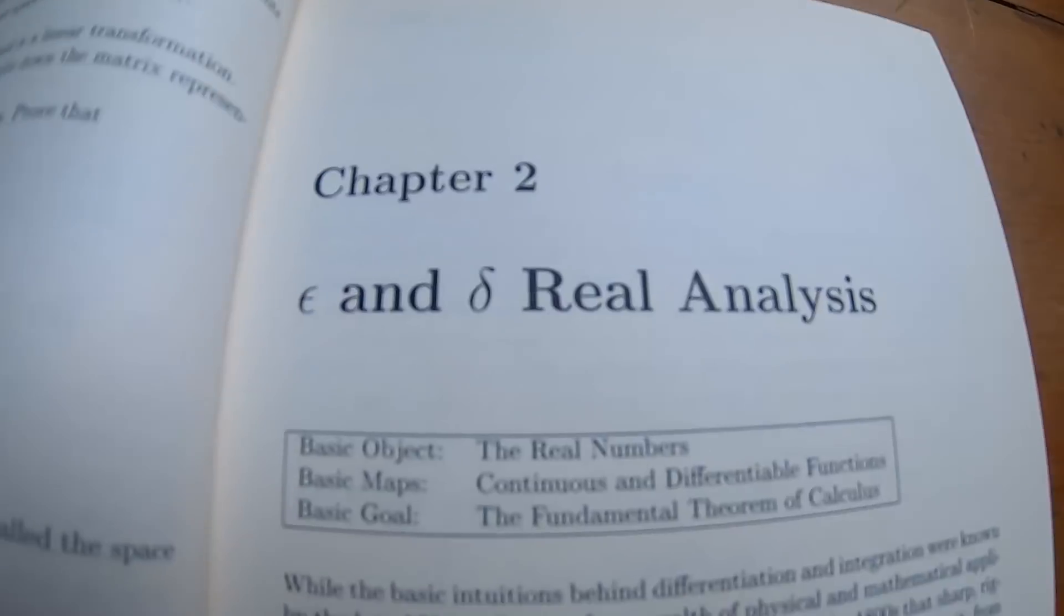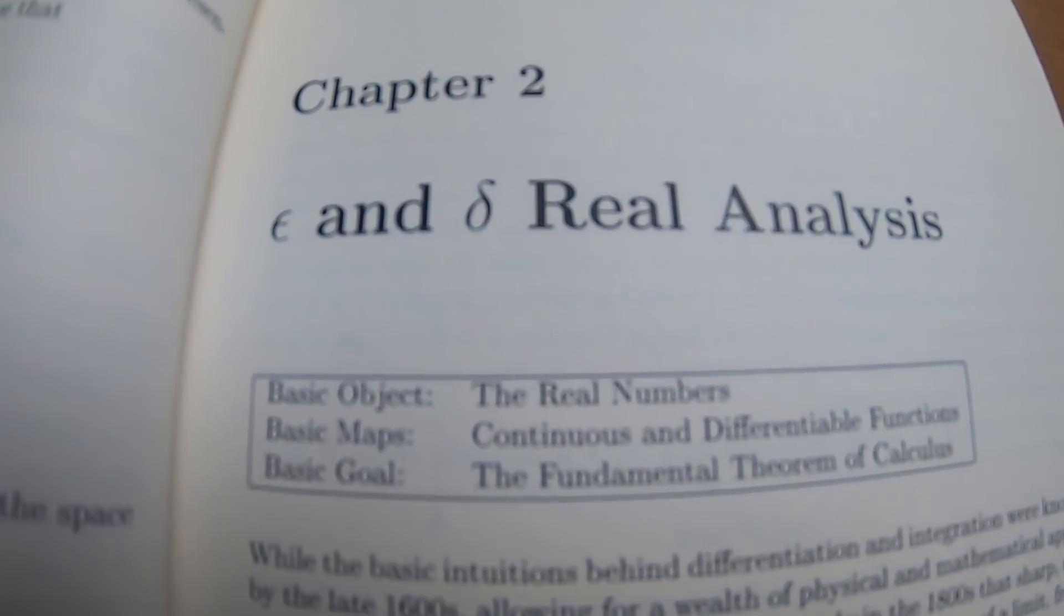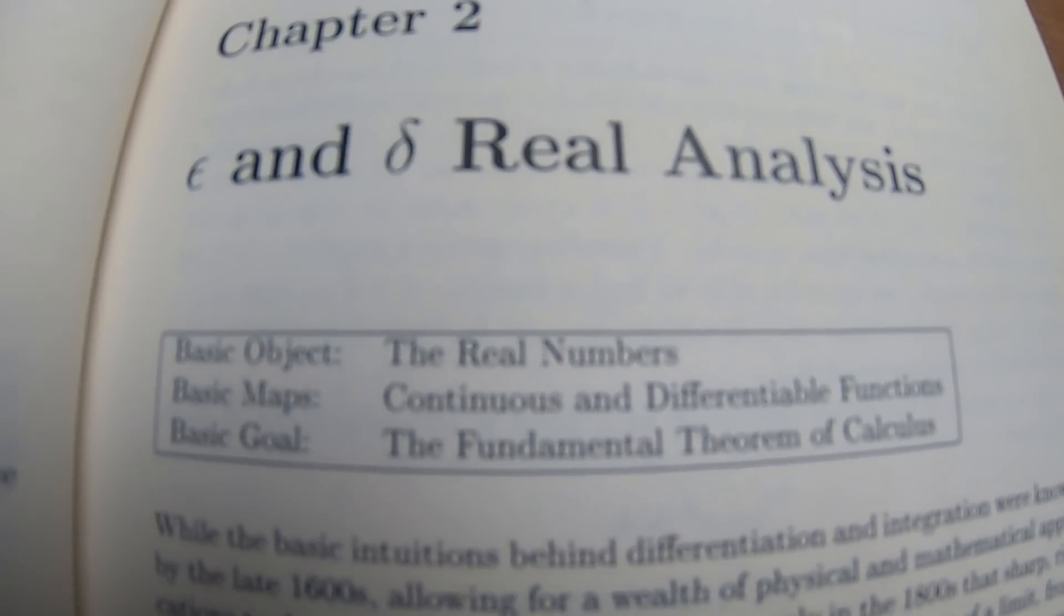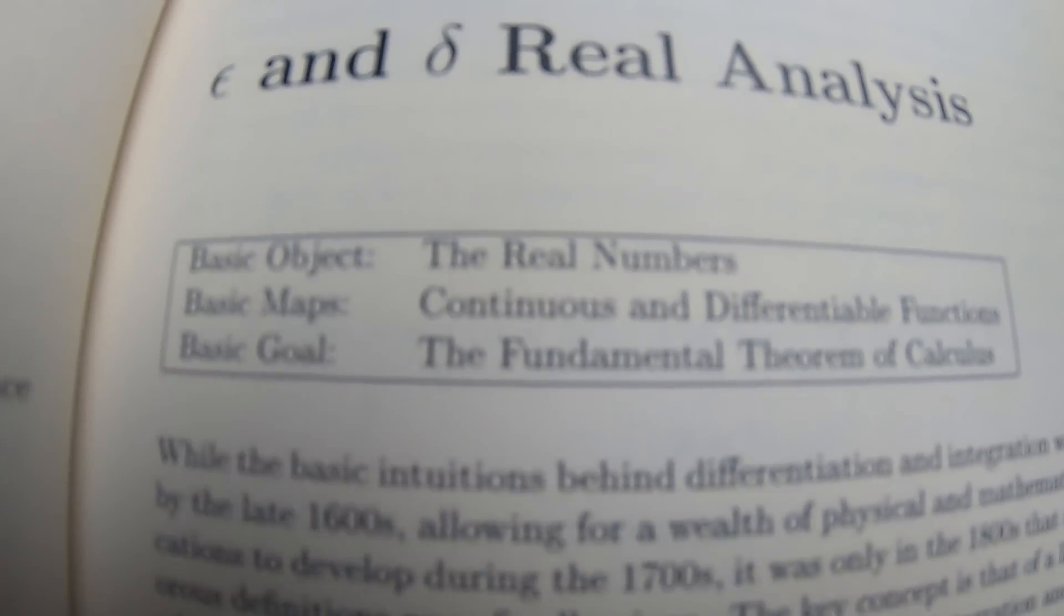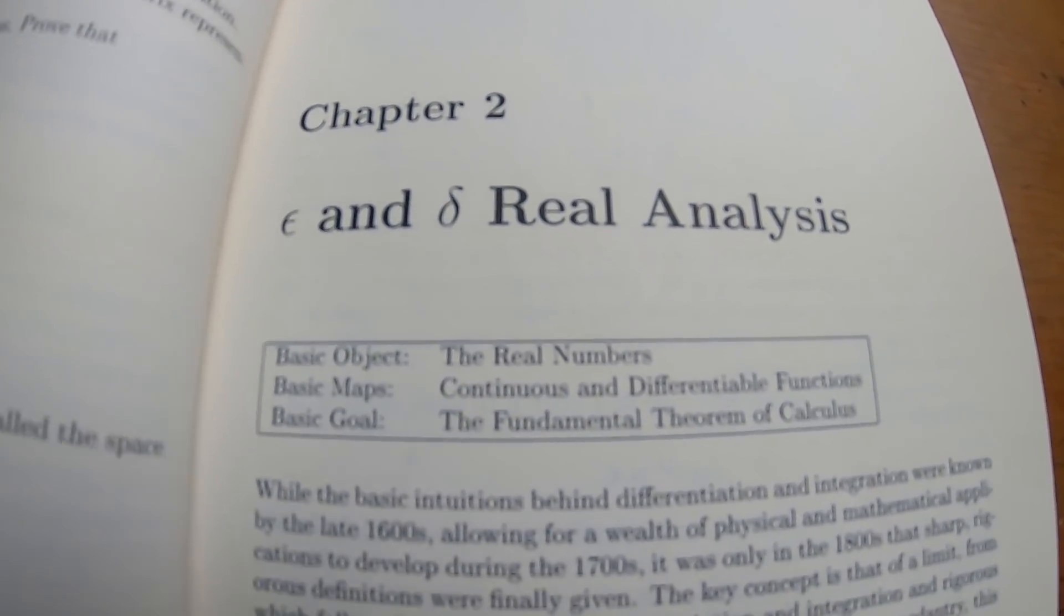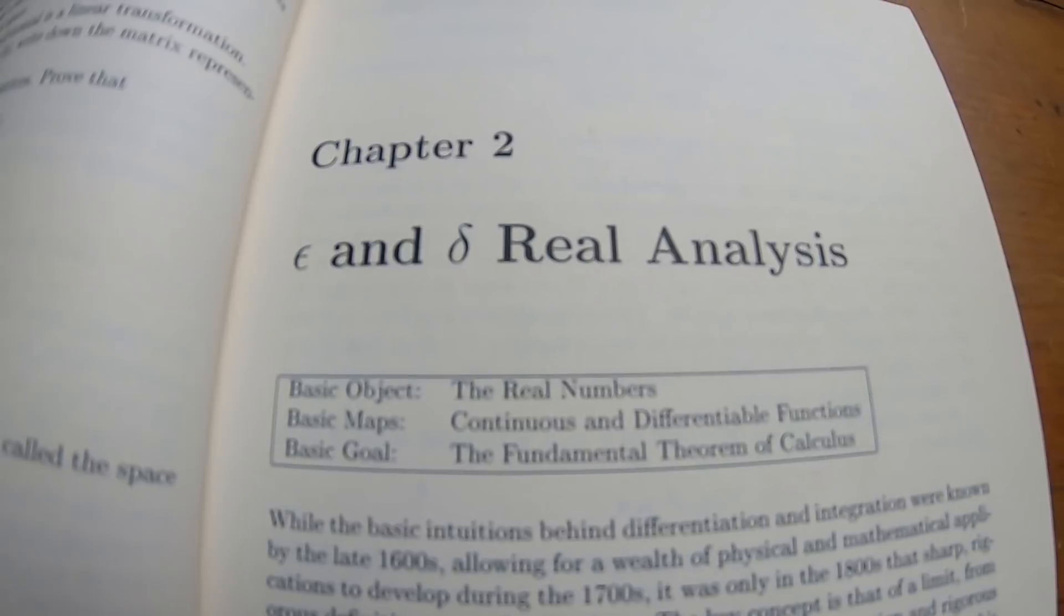And here again, look, epsilon and delta are real analysis. So he does the same thing. The basic object is the real numbers. And then the basic maps are continuous and differentiable functions. And the basic goal, fundamental theorem of calculus. So he does this for every topic. Let's just briefly look at a couple other topics.